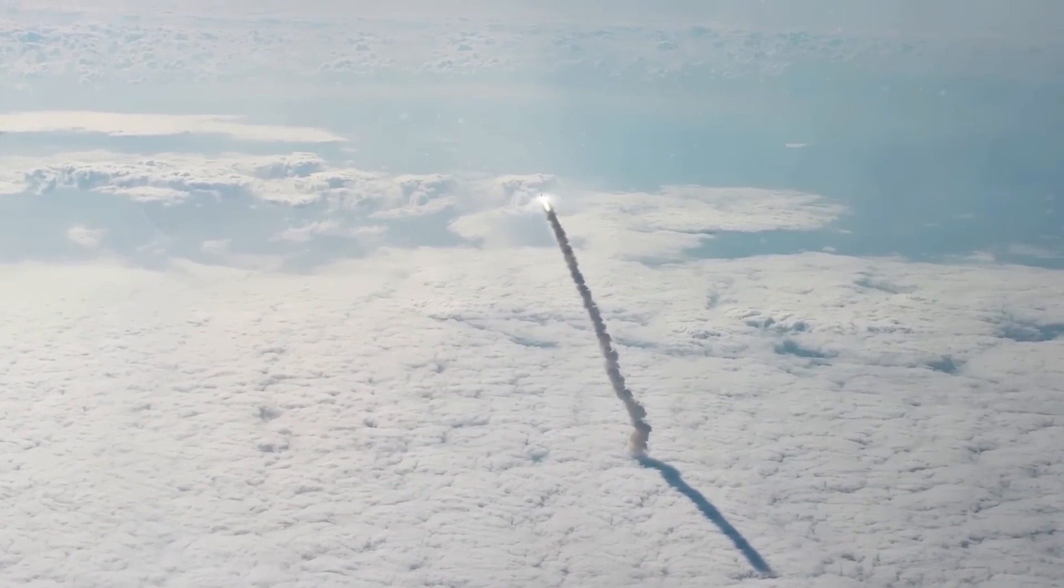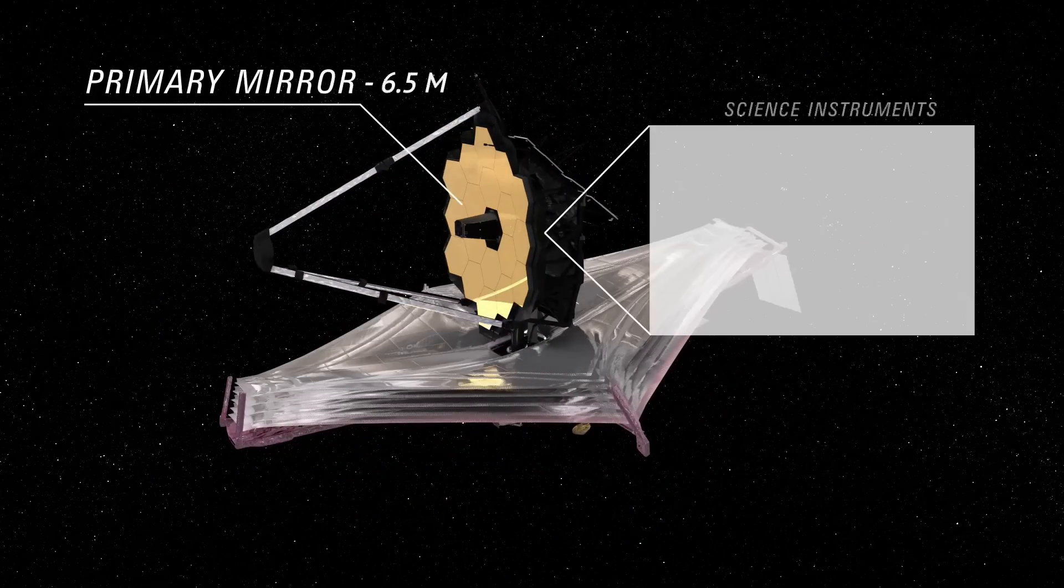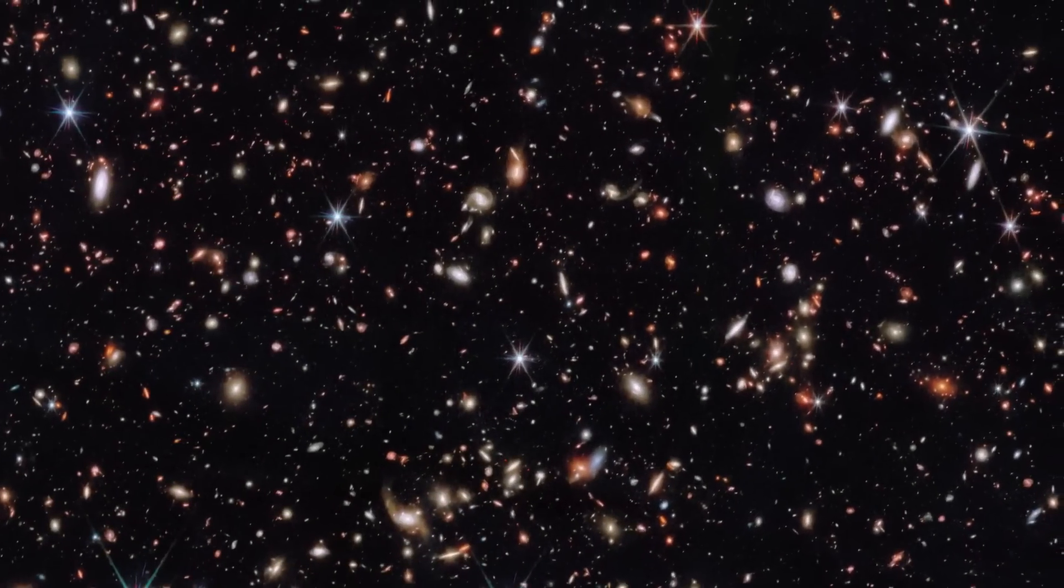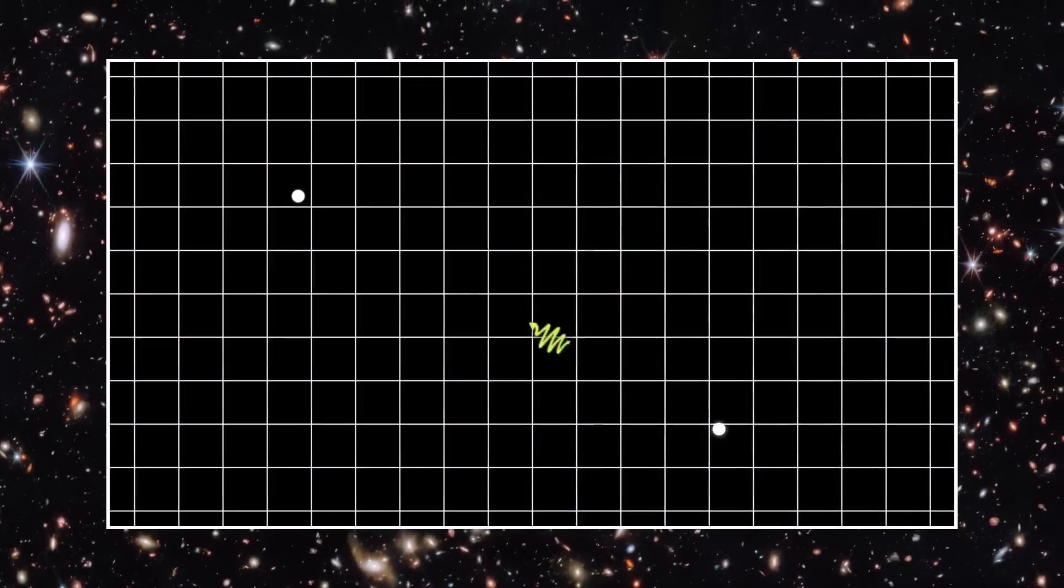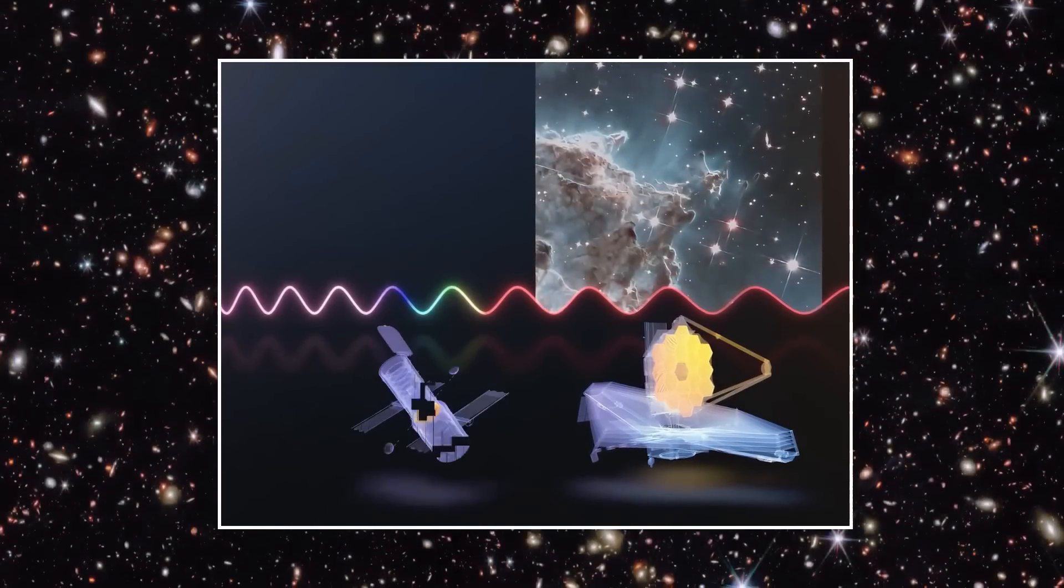Then, the James Webb Space Telescope was launched. Armed with a massive 6.5 meter mirror and tuned to infrared, the exact kind of stretched, ancient light that early galaxies emit, Webb didn't just continue Hubble's work. It crushed its records.